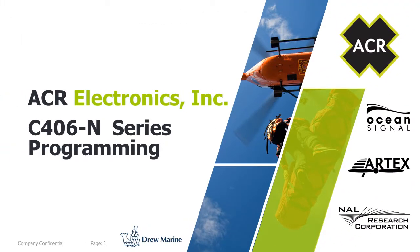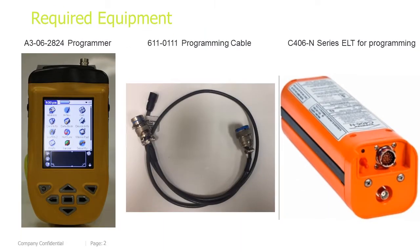Welcome to the C46-N series programming module. Required equipment: you will need a programmer, part number A3-06-2824, a programming cable, part number 611-0111, and a C46-N series ELT or PA for programming.